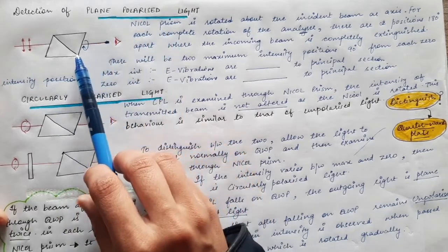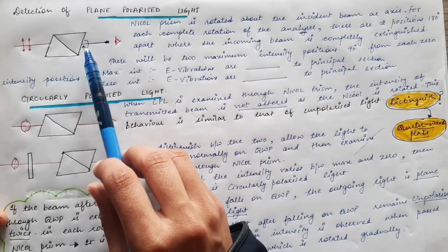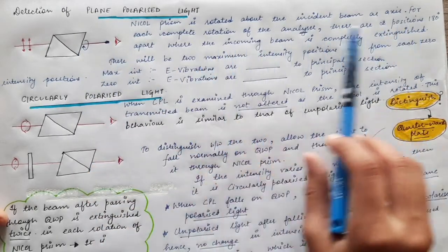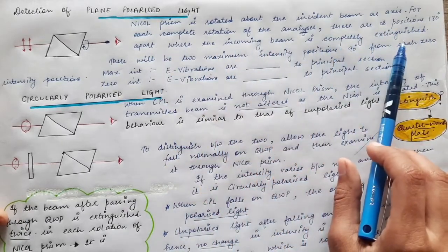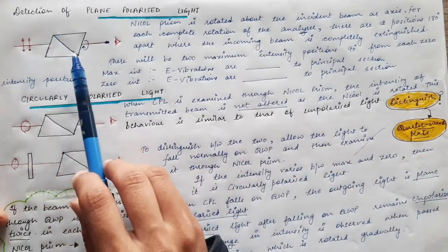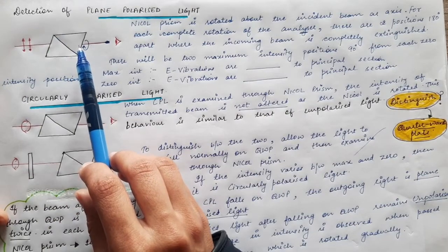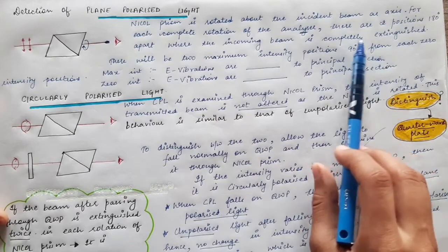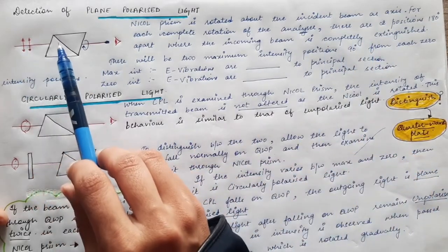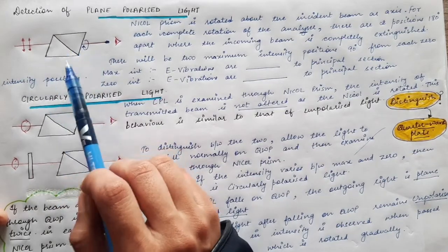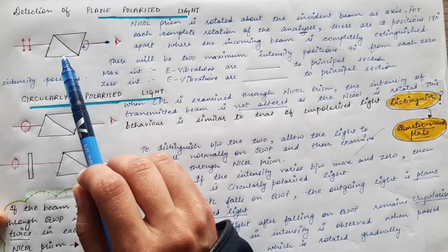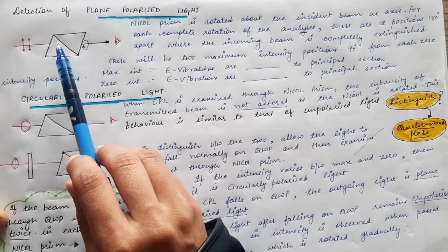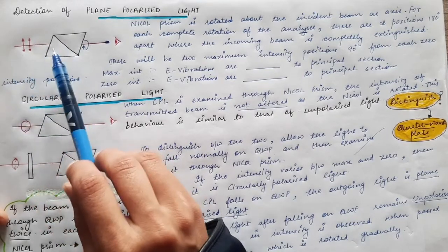We take a Nicol prism and start rotating it. In one complete rotation of 360 degrees, there are two positions which are 180 degrees apart where the incoming beam is completely extinguished. If the light is plane polarized, on rotation of the Nicol prism there will be two positions 180 degrees apart where the beam is completely extinguished — because at those angles the vibrations of the incoming light will be perpendicular to the principal section, so no light is transmitted.